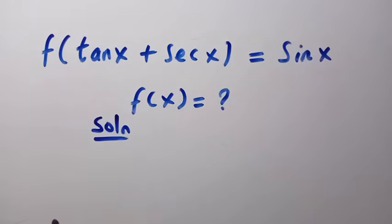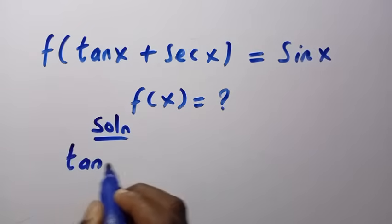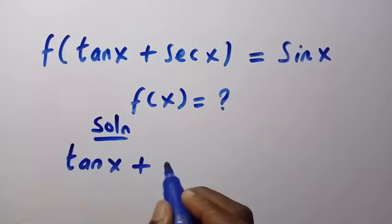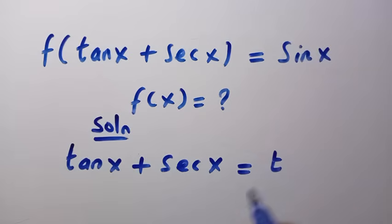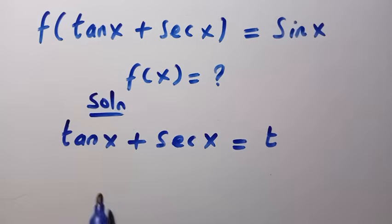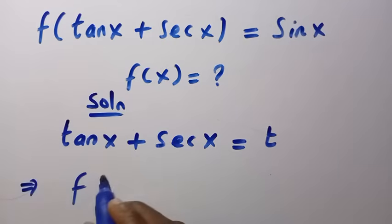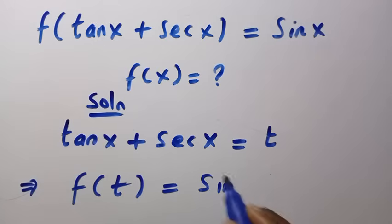The first step we are going to take is: suppose we let tan x plus sec x equal t. By letting this equal t, that covers the whole domain of the original function. So the function becomes f of t equals sin x.